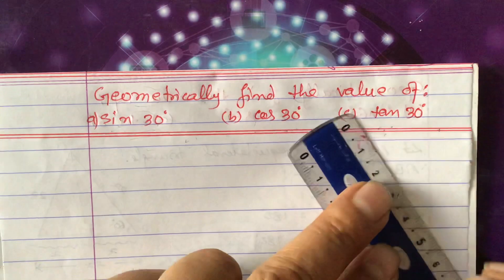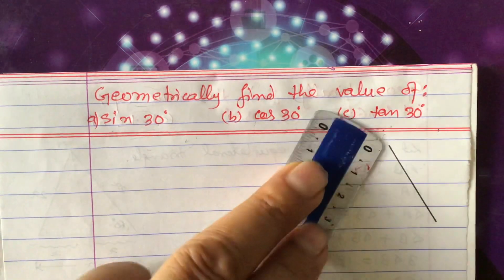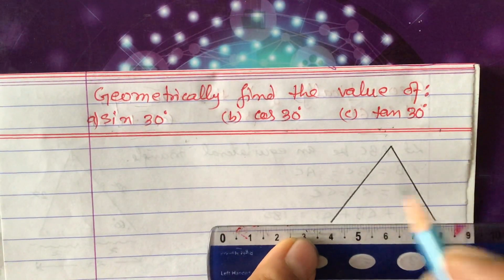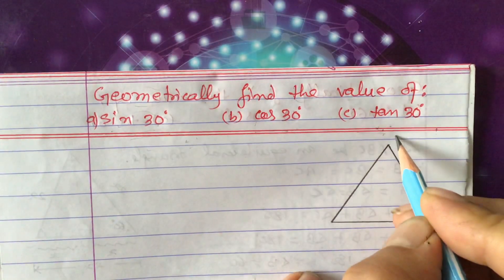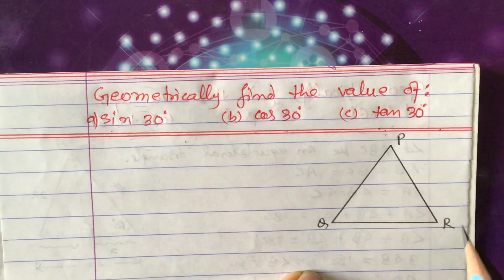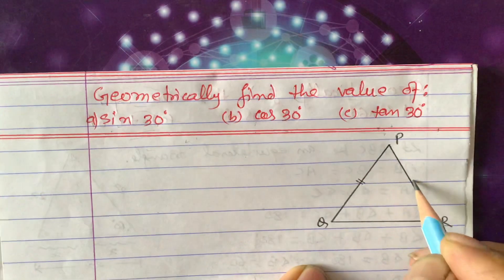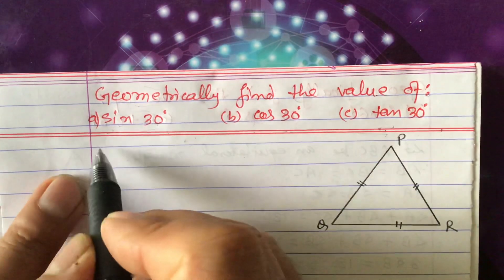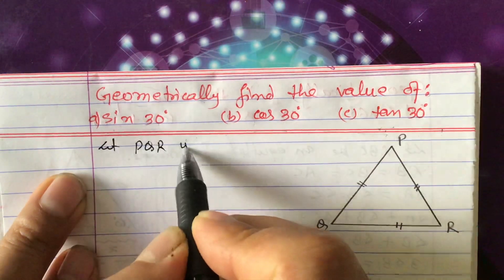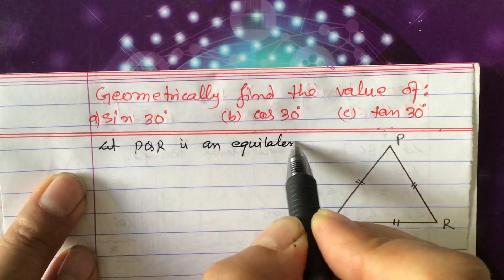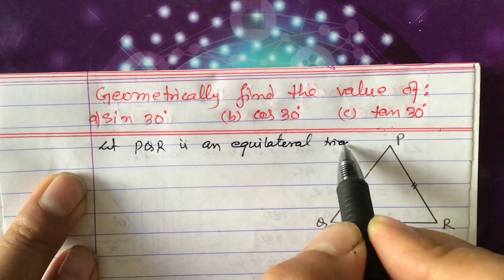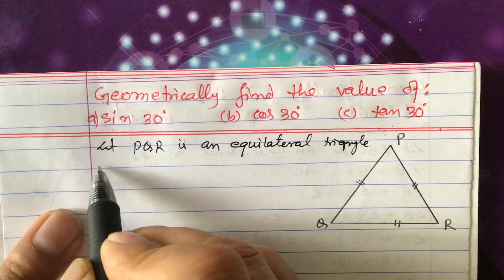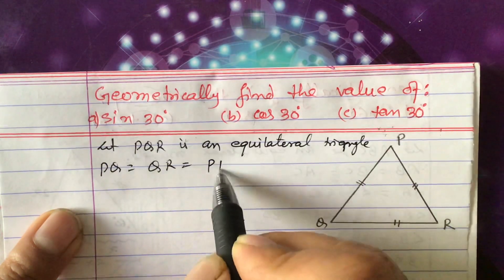Let us draw an equilateral triangle first of all. I will show you the drawing also. In examinations, you have to draw this triangle — always draw with the help of a pencil, not a pen. Let us name it: suppose this is P, Q, R. It is an equilateral triangle, so all sides are equal. Let P, Q, R be an equilateral triangle.